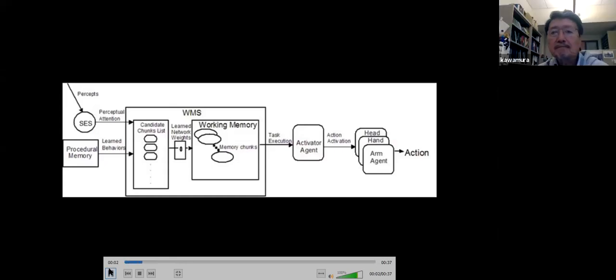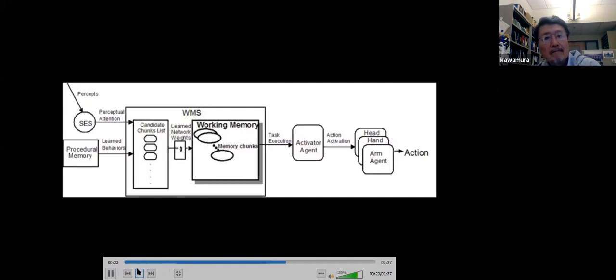Isaac uses the working memory system to maintain task-related information. Candidate chunks of information are created from Isaac's sensory egosphere, which holds perceptual information, and from long-term memory, which holds procedural information for the performance of behaviors. Once created, the chunks are stored within the candidate chunks list. When given a task, working memory actively maintains only those chunks it has learned are relevant to the current task. These chunks are used by the activator agent to guide task execution.